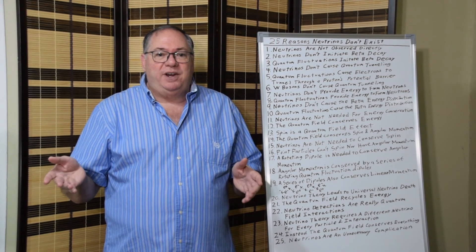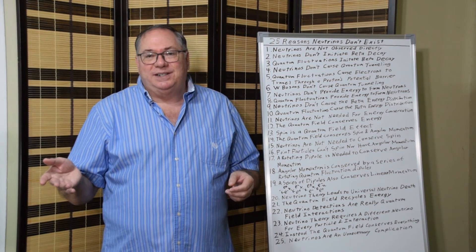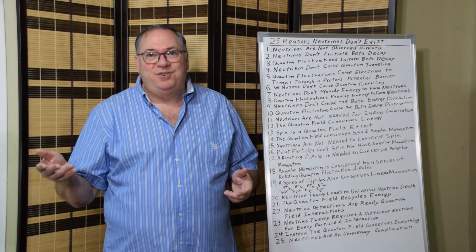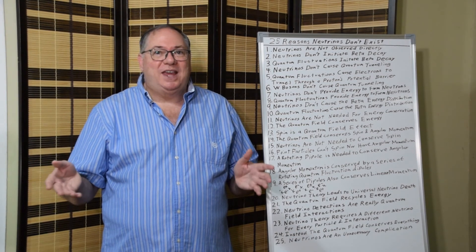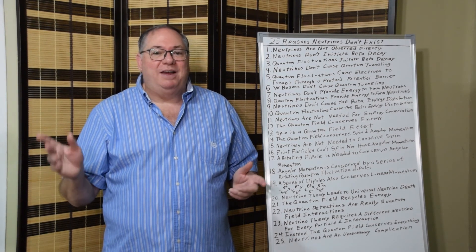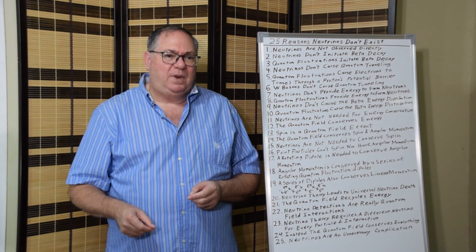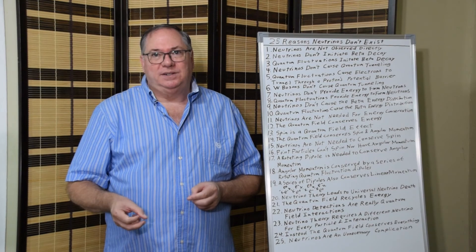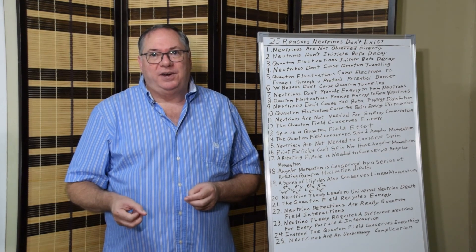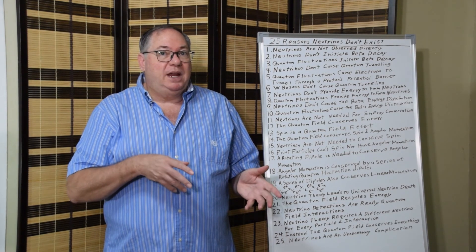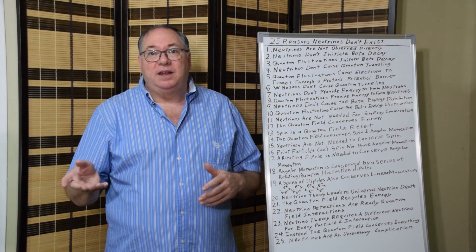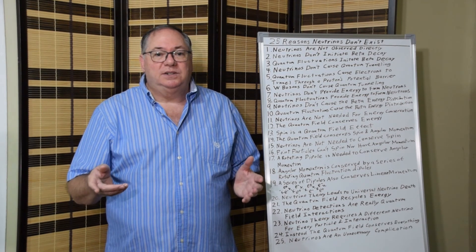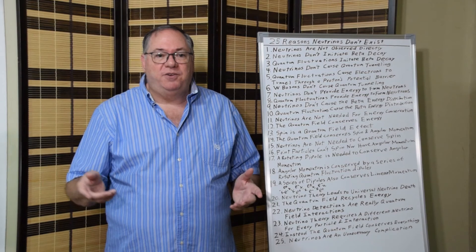Eleven, neutrinos are not needed for energy conservation. There's nothing left for the neutrino — neutrinos, under this scheme, don't have energy. Twelve, quantum fluctuations conserve the energy, whether it's at the beginning or the end of the interaction. Quantum fluctuations conserve the energy, not a neutrino.